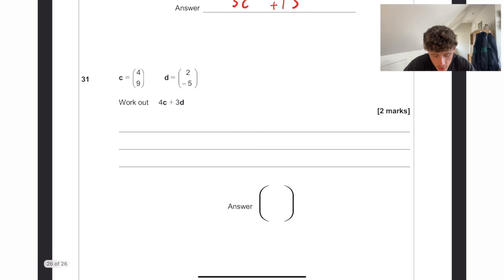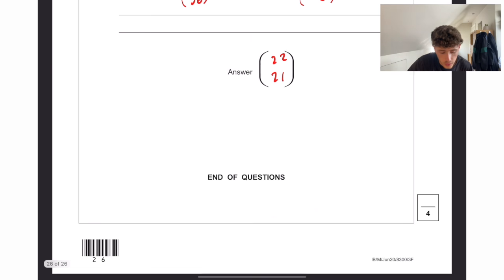And the final question, 4c, so 4c is going to be 4 times the 4 and the 9, so 16 and 36, plus 3d, which is going to equal 6 and minus 15. So adding those together, we're going to get 22 and 21, and that is the end of this paper.